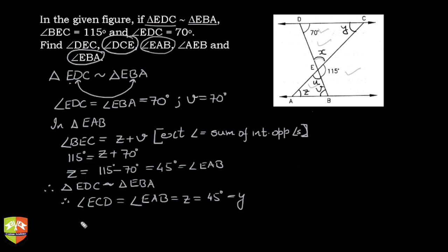Clearly X is nothing but 180 degrees minus 70 degrees minus Y which is 45 degrees. Why is this? This is because of angle sum property of a triangle.